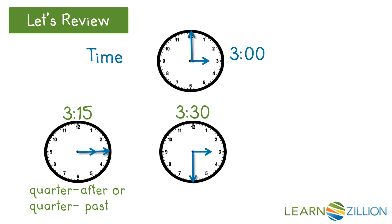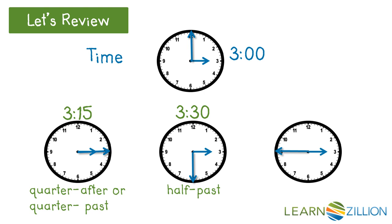What time does this clock read? That's right — 3:30. Since the minute hand is halfway around the clock, we can also say half past three. Lastly, what time does this clock read? That's correct — 3:45. Since the minute hand only has one-quarter of the way left until it reaches four o'clock, we can say it's quarter till four.